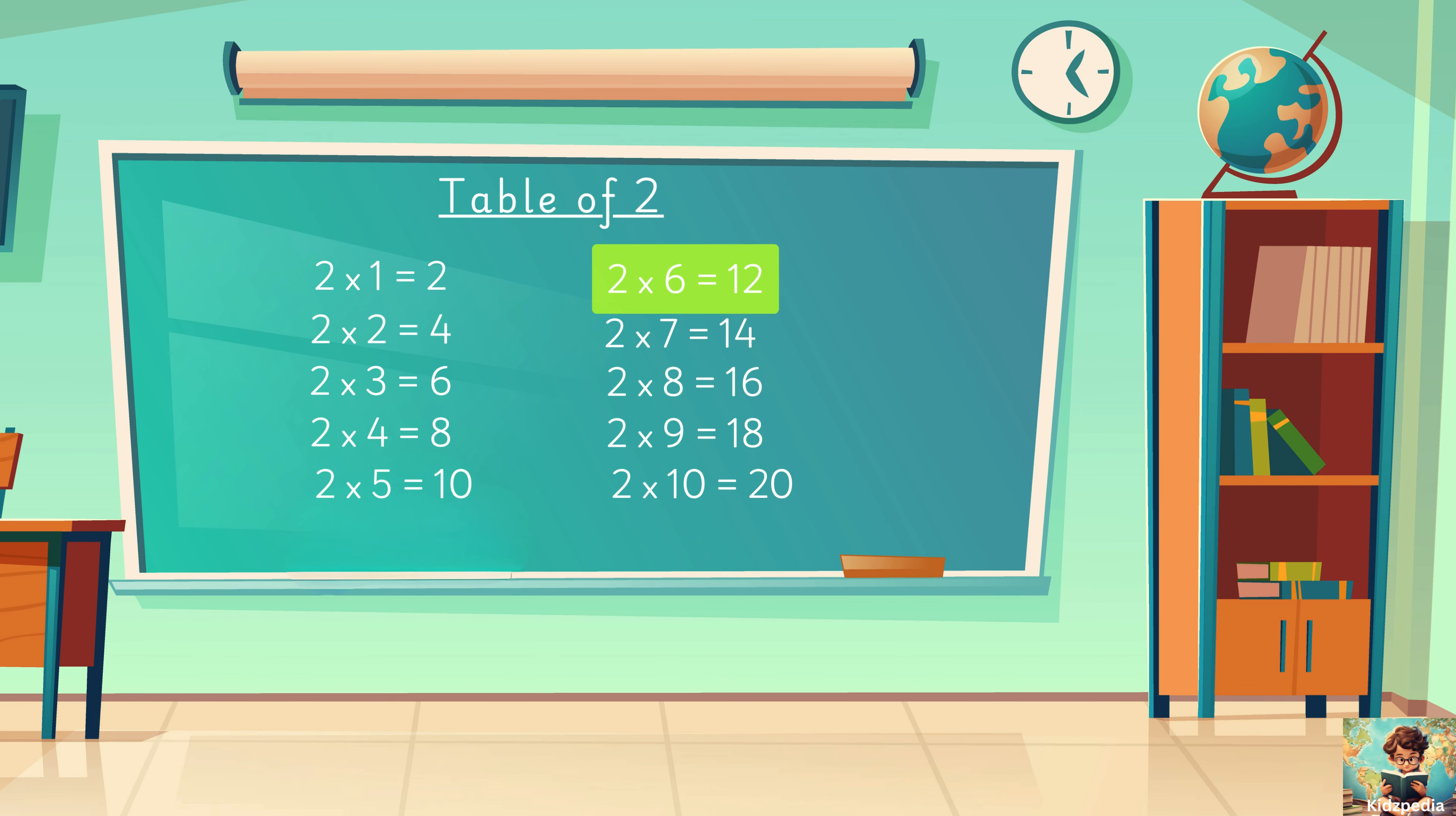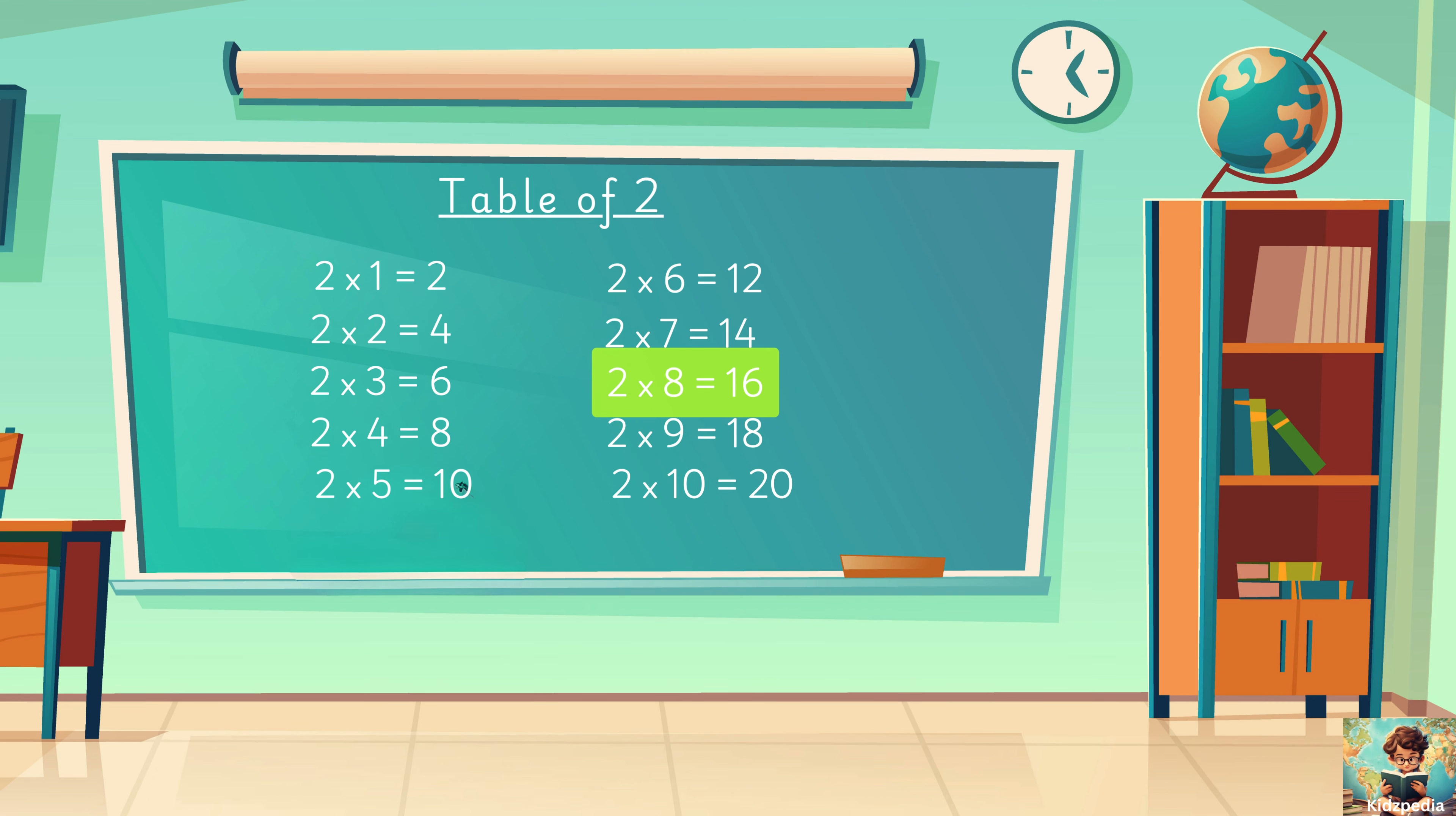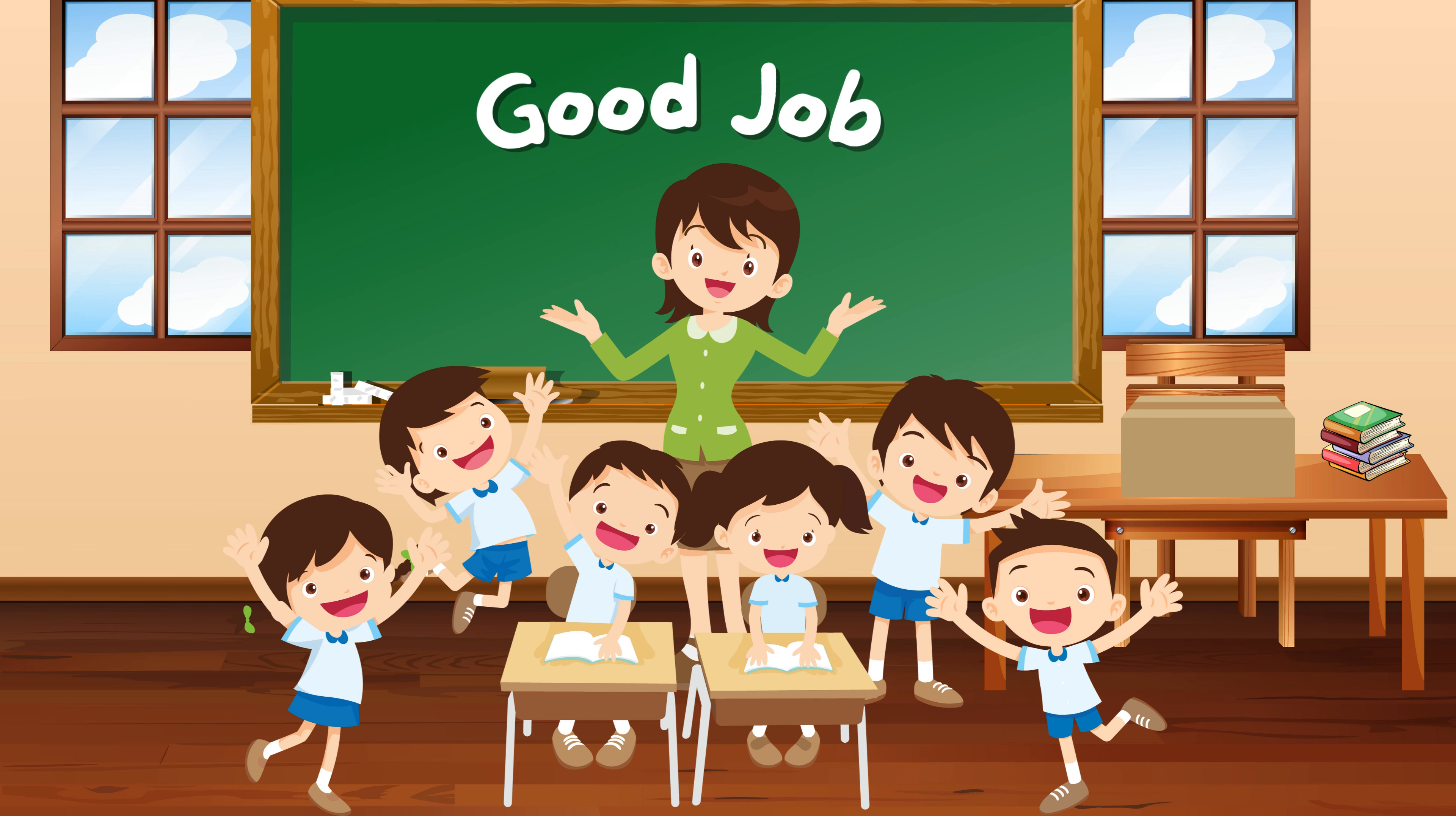Two six are twelve, two sevens are fourteen, two eights are sixteen, two nines are eighteen, two tens are twenty. Good job kids!